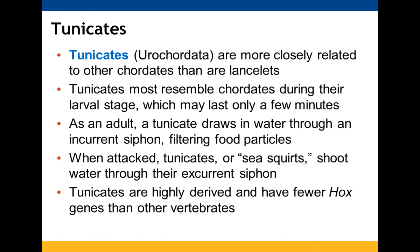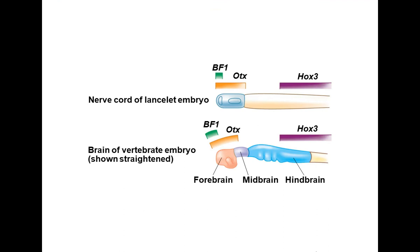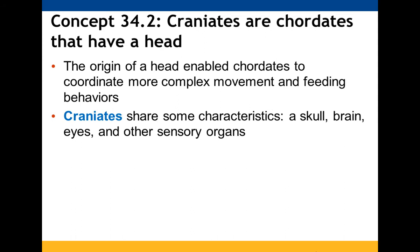Tunicates draw water in through a current, filter it, and shoot it out. They are sessile and highly modified as adults. Ancestral chordates may have resembled lancelets. The same Hox genes that organize the vertebrate body plan are expressed in lancelets. Based on DNA sequencing, genes associated with the heart and thyroid are found in lancelets. Genes such as BF1 and OTX found in the nerve cord of lancelets are also found in vertebrates.